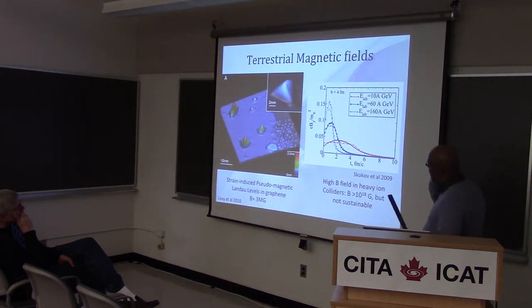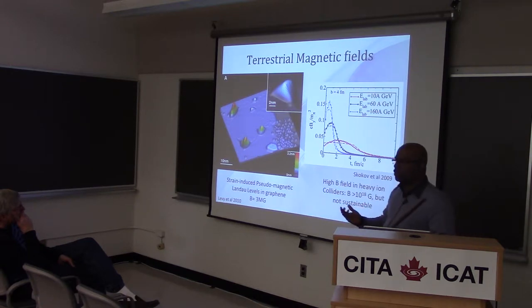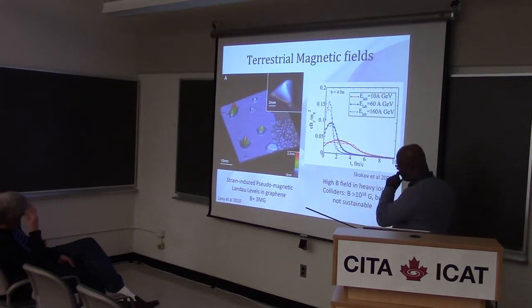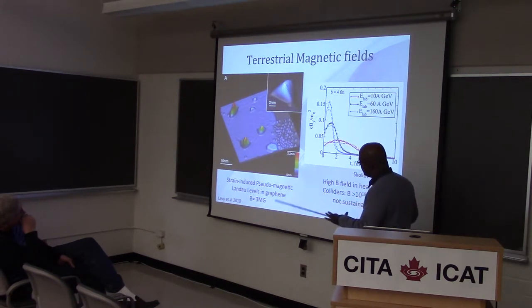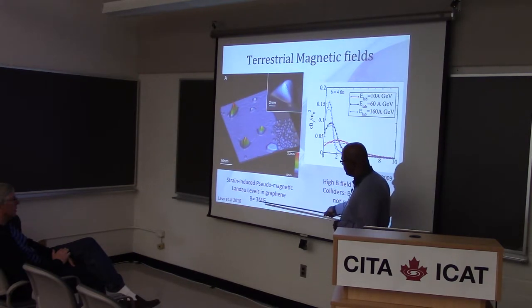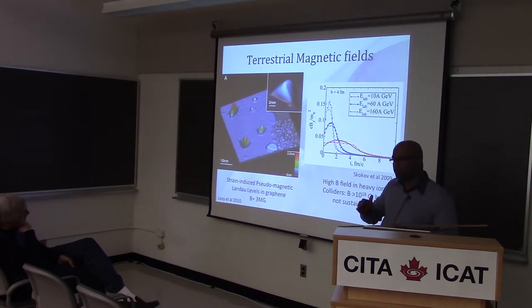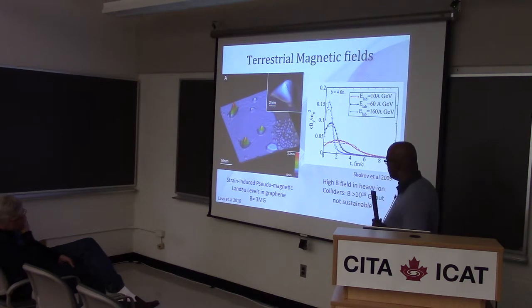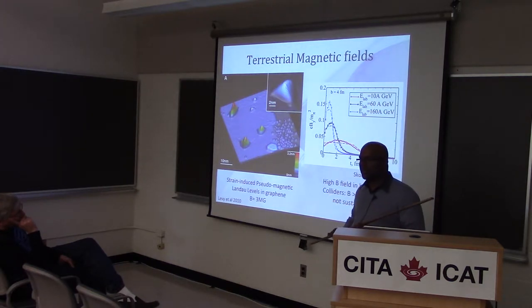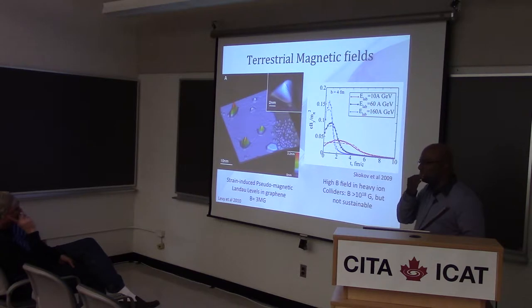If we look at terrestrial magnetic fields in the lab, we can generate supermagnets consistently of strengths of about 10 tesla — about 10 to the 5 gauss. Recent experiments with graphene have arranged the lattice in almost Landau-like levels, so atoms behave as though they're experiencing fields of about 3 megagauss, though there's no real magnetic field there. In heavy-ion colliders it's possible to generate fields of about 10 to the 18 gauss, but these are really transient — sub-attosecond timescales — so one can't really do experiments studying atomic structure in these really strong magnetic fields.